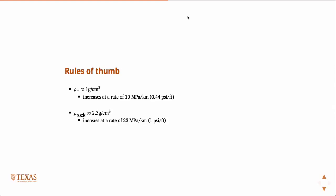The density of rock is by no means a constant, but approximately 2.3 grams per centimeter cubed, and that increases at a rate of 23 megapascals per kilometer. And this one we get really lucky on one psi per foot.